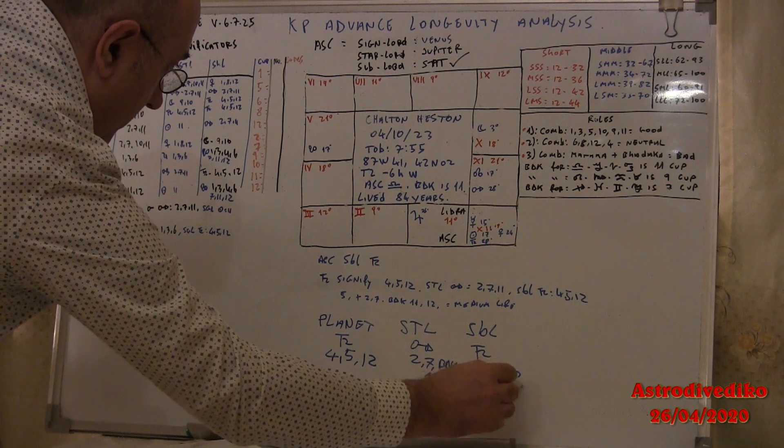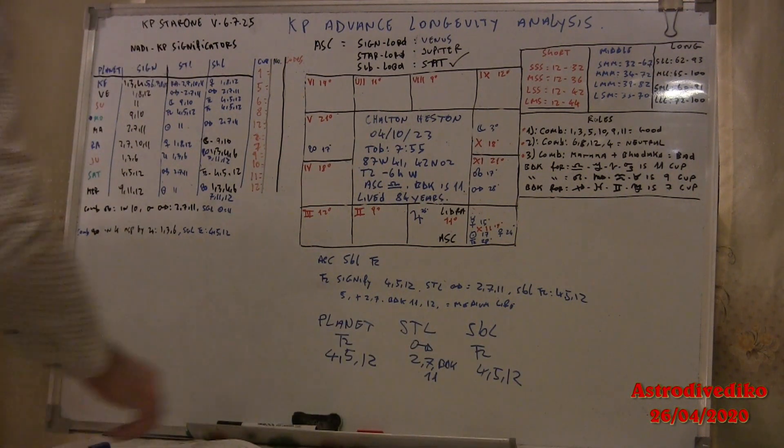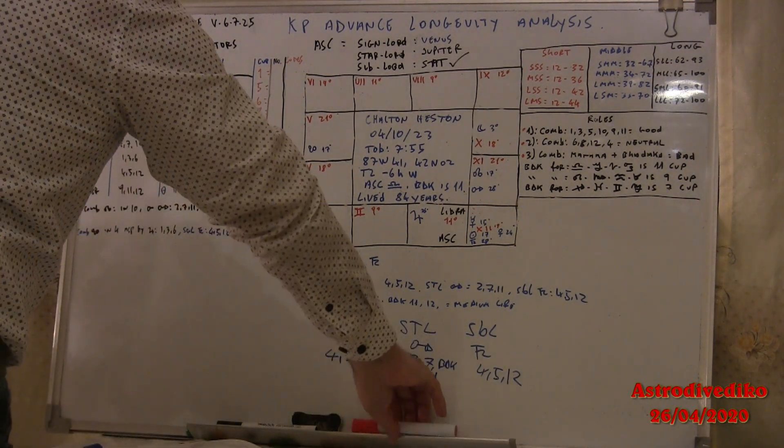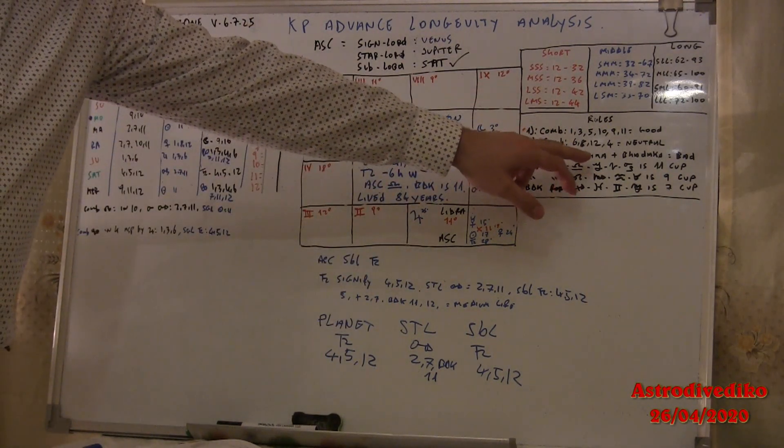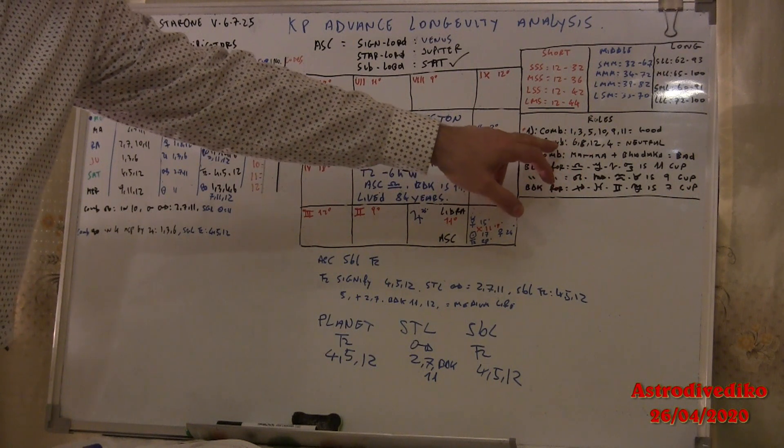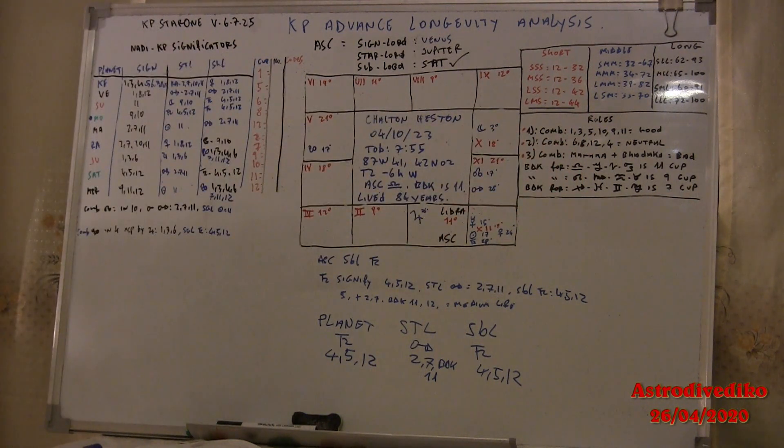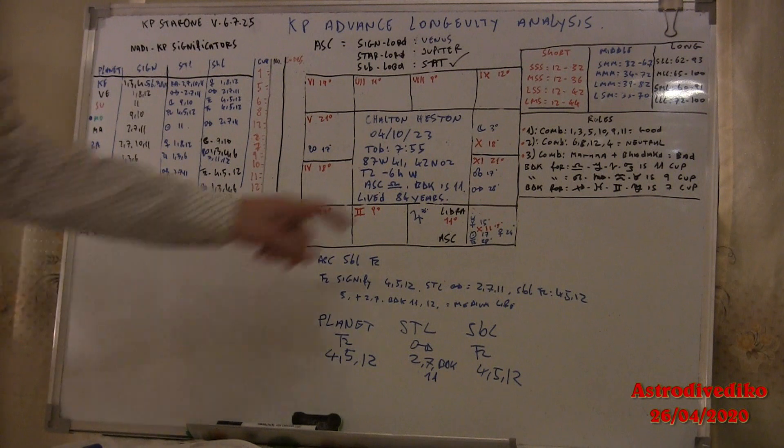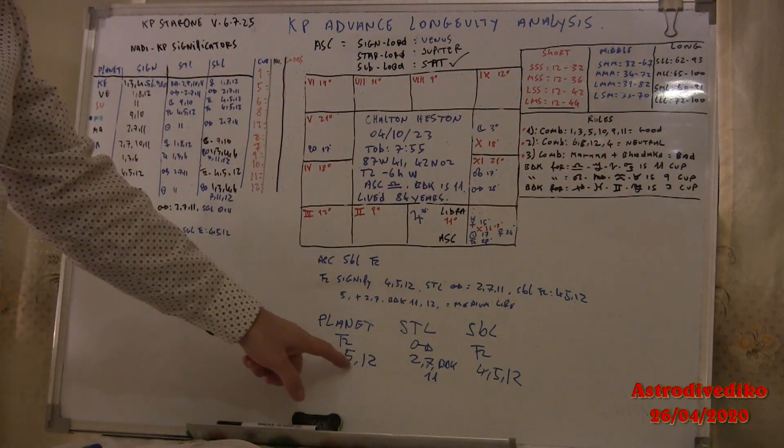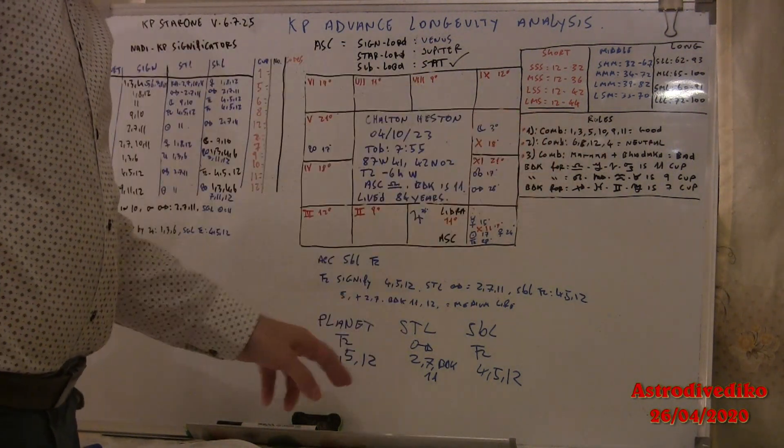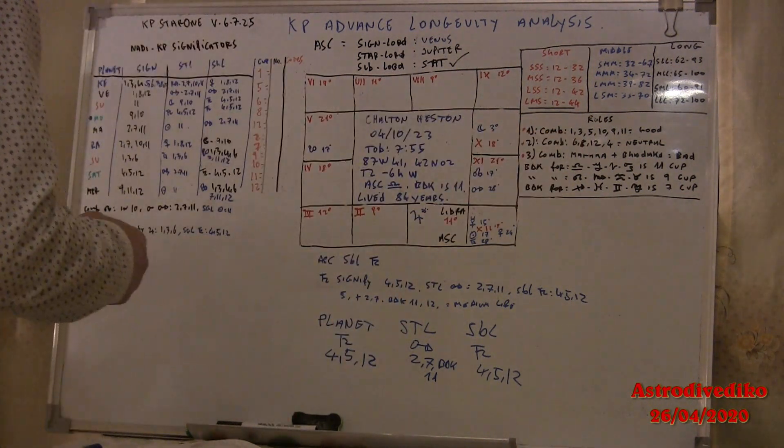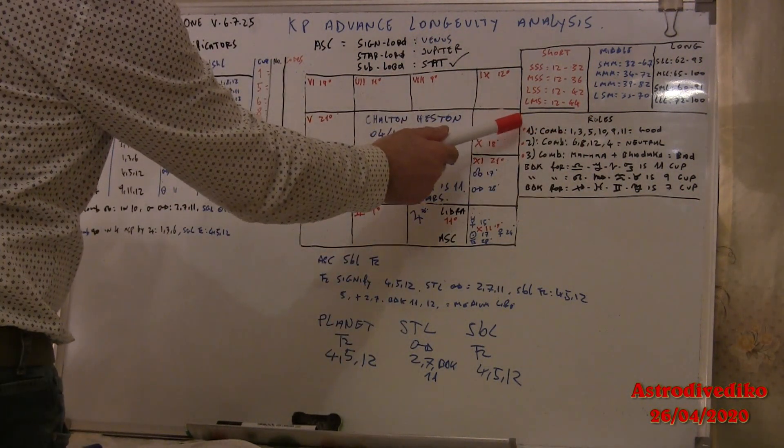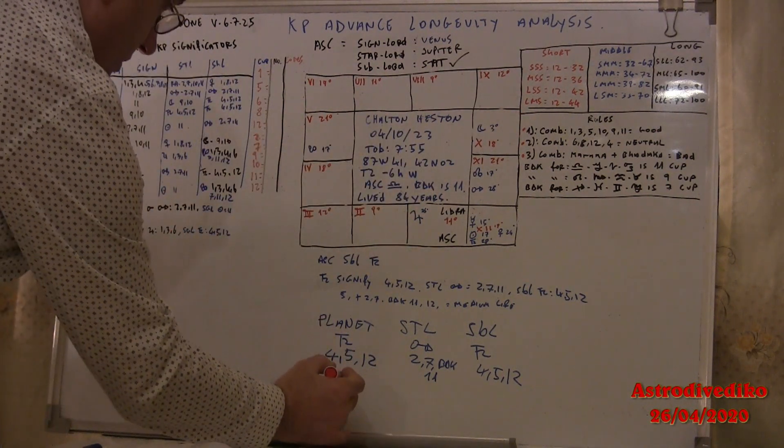Saturn is 4, 5, 12. This will become 4 is a neutral combination, 5 is a good house, and 12 is neutral. So combinations of 1 and 2 becomes long.